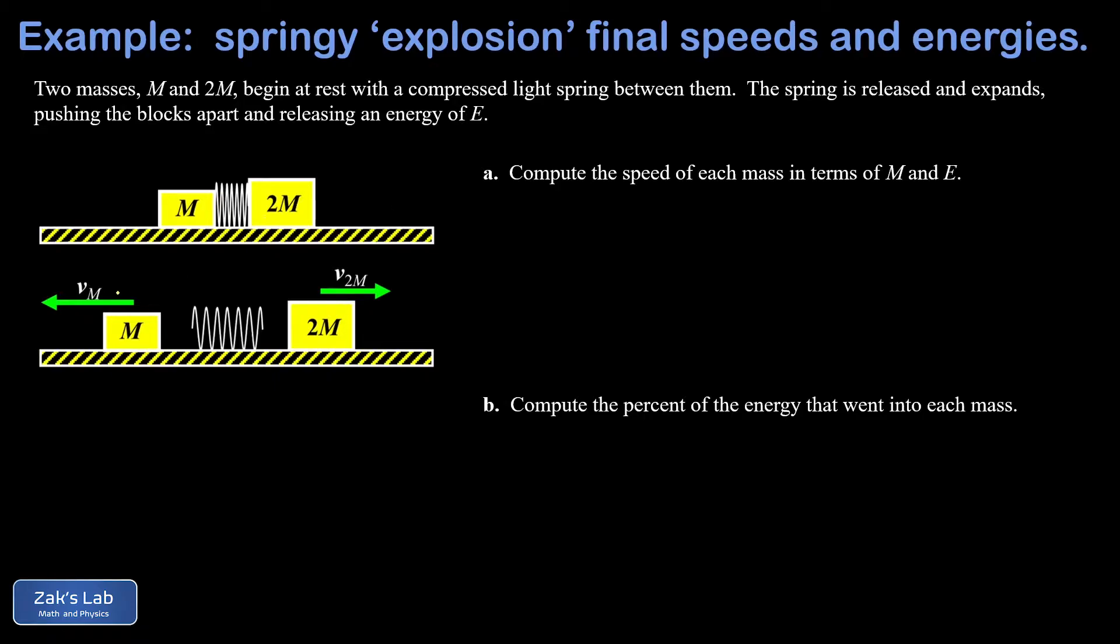The problem is split into two parts. First we want to get the final speed of each of these masses in terms of m and E. And second we want to get the percent of the final kinetic energy that's in each of these masses.